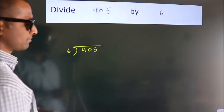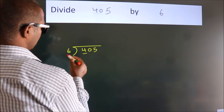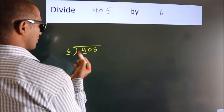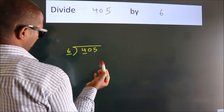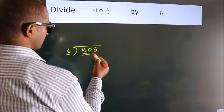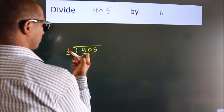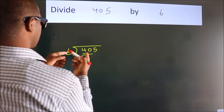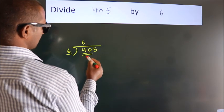Next, here we have 4, here 6. 4 is smaller than 6, so we should take two numbers: 40. A number close to 40 in the sixth table is 6 times 6, 36.